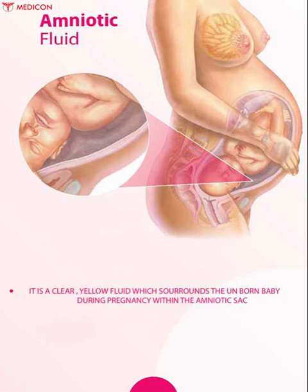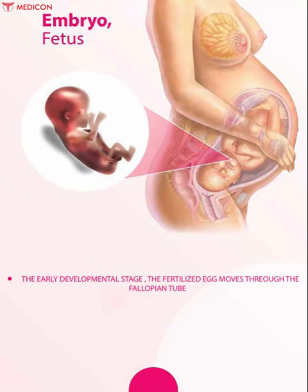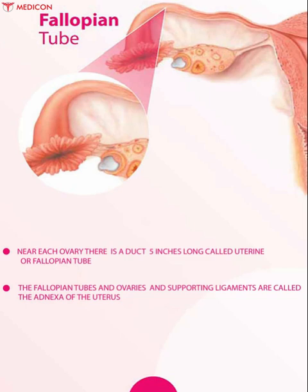Amniotic fluid cushions the baby from outside pressure, acting as a shock absorber, and also contains antibodies. Embryo is the early developmental stage where the fertilized egg moves through the fallopian tube and starts to divide. A day after fertilization it has two cells, in two days four cells, in three days eight cells, and in six days it has over one hundred cells.